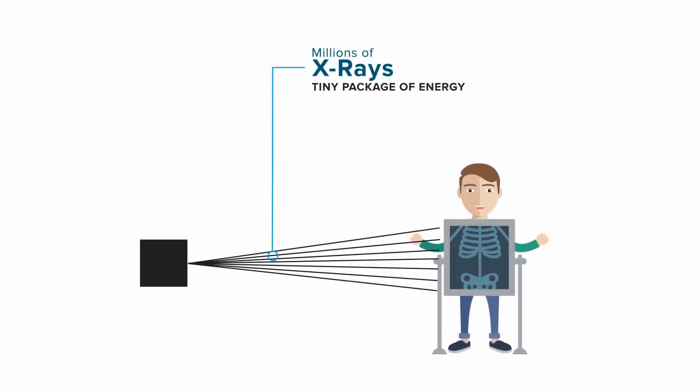An X-ray is simply a tiny package of energy that we call a photon. That's why sometimes we refer to it as an X-ray photon. X-ray photons have a lot of energy, but they have no mass, they have no charge, and they travel at the speed of light. Their velocity never changes.